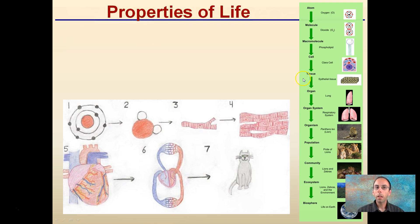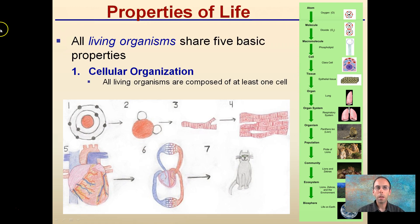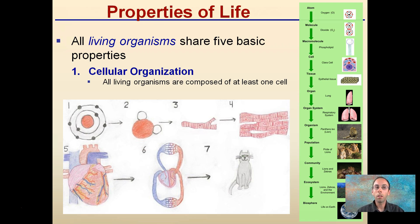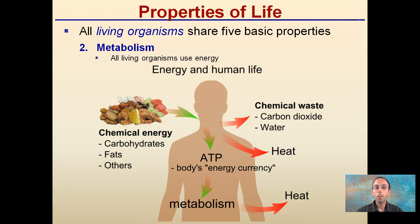There are five main properties of life that all living organisms share. The first is cellular organization — all organisms are composed of at least one cell. Cells are composed of atoms, molecules, and macromolecules. Cells combine to form tissues, tissues combine to form organs, and so on. All living organisms are composed of at least one cell.